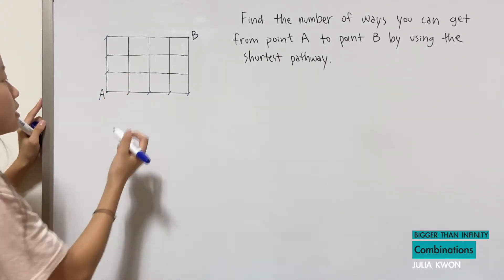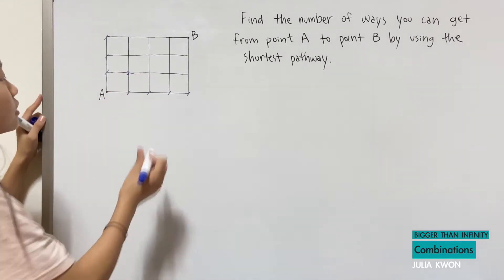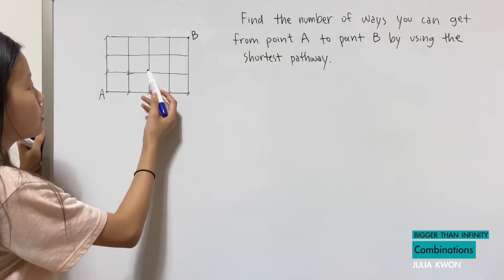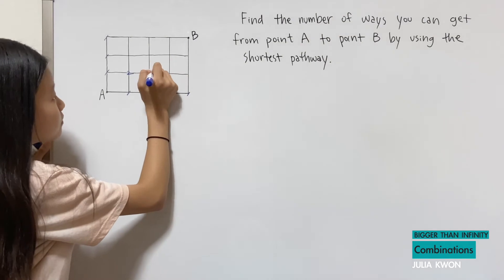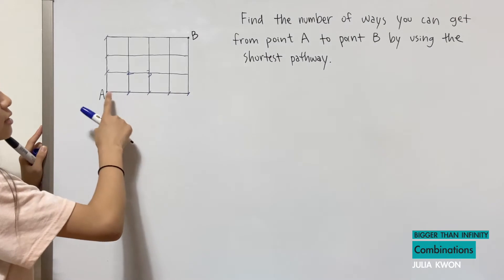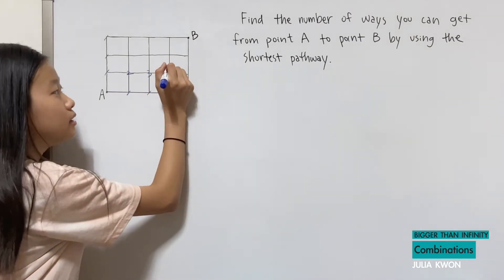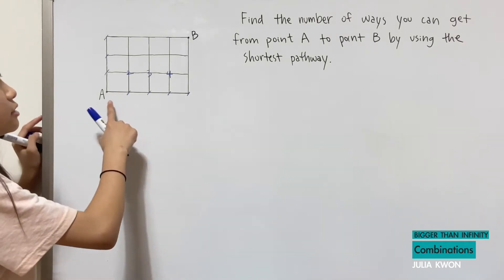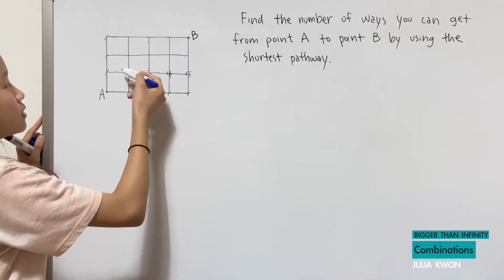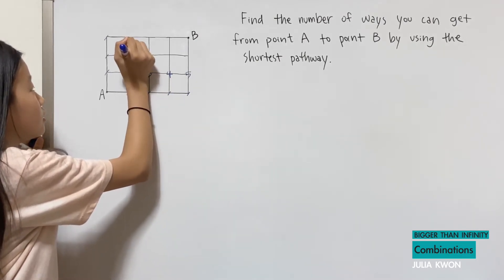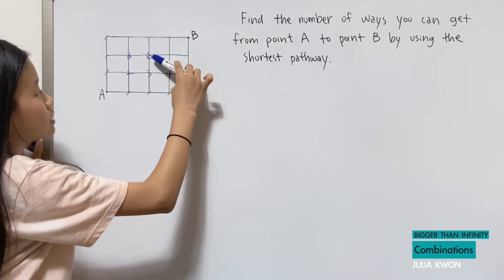To get to the next interior point, it's one way plus one way, which makes two. To get to the next part, you can do two plus one, which is three. To get to the next part, you can count one, two, three, four ways — or just add three and one to get four. So you don't have to count at all, you can just add these together. This part would be five, and one plus two is three.